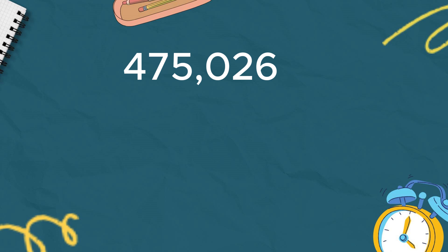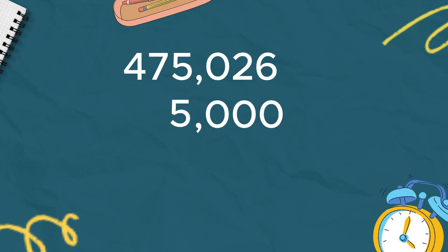How about rounding to the 1,000 place? The rounding digit in the thousands place is 5. The digit after 5 is 0. Since 0 is less than 5, we do not change the rounding digit — we copy it. All digits to its right become 0. Write 5, then three zeros, and don't forget to add 47, because it is part of the given number.